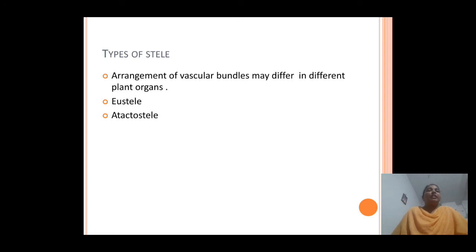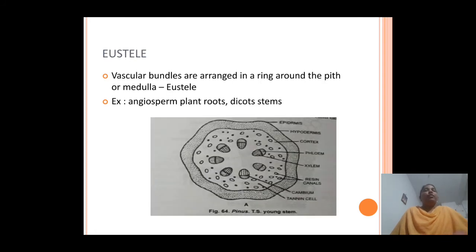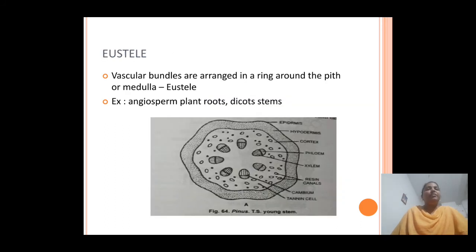Based on the arrangement of vascular bundles in the stele region, two types of steles are identified in plants: the eustele and the atactostele. In the eustele, the vascular bundles are arranged in a ring around the pith or medulla. This type is found in angiosperm plant roots and also dicot stems. The picture clearly shows vascular bundles arranged in a complete ring around the medulla.